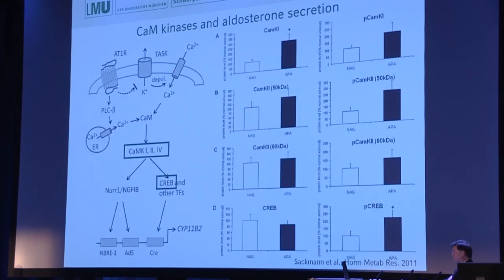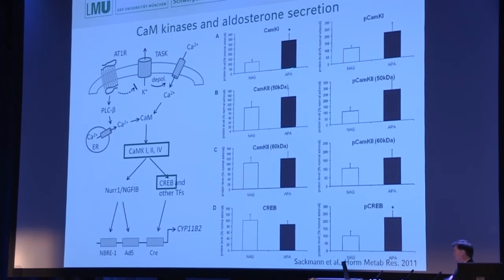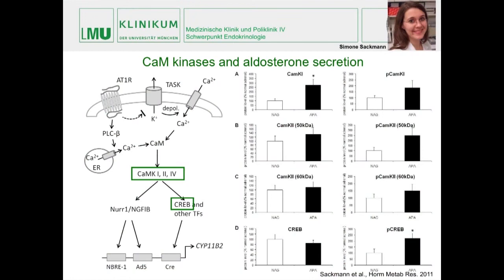We did some experiments looking at CaM kinase protein content and phosphorylation. There were some differences for aldosterone-producing adenomas compared to normal adrenal glands — slightly higher levels of CaM kinase 1 and also phosphorylation of CaM kinase 2, which is associated with phosphorylation of CREB. However, this is only a snapshot, and it's quite difficult to make clear distinctions when comparing tumorous disease with normal adrenal gland.